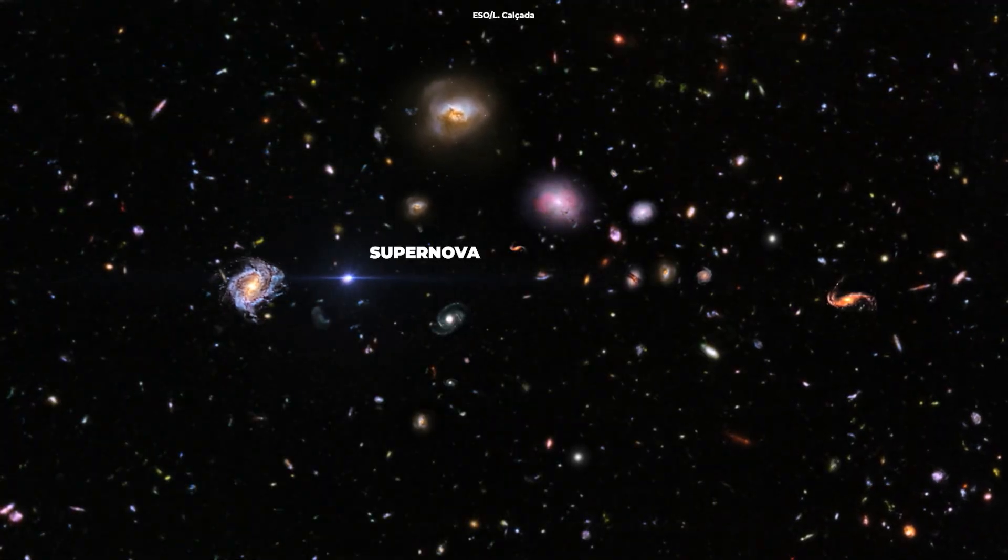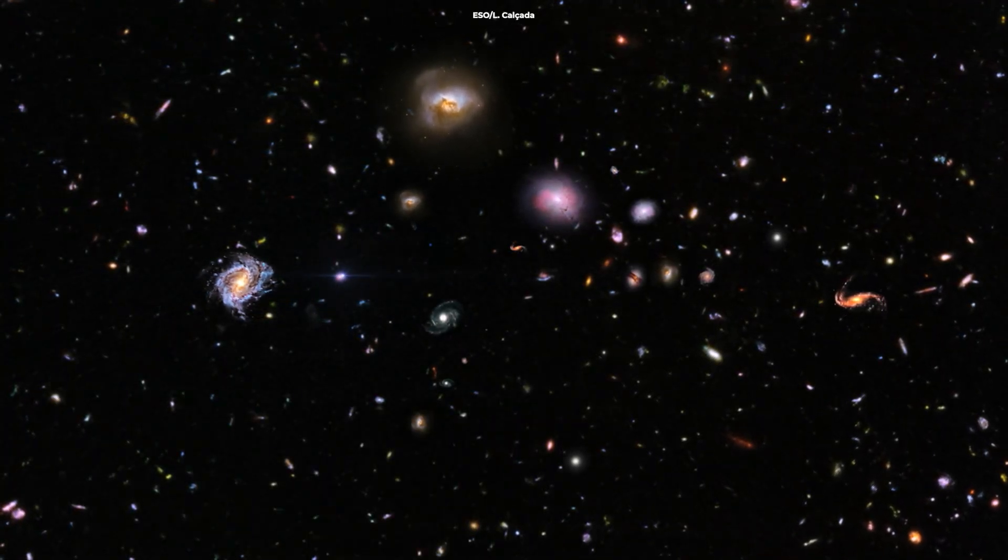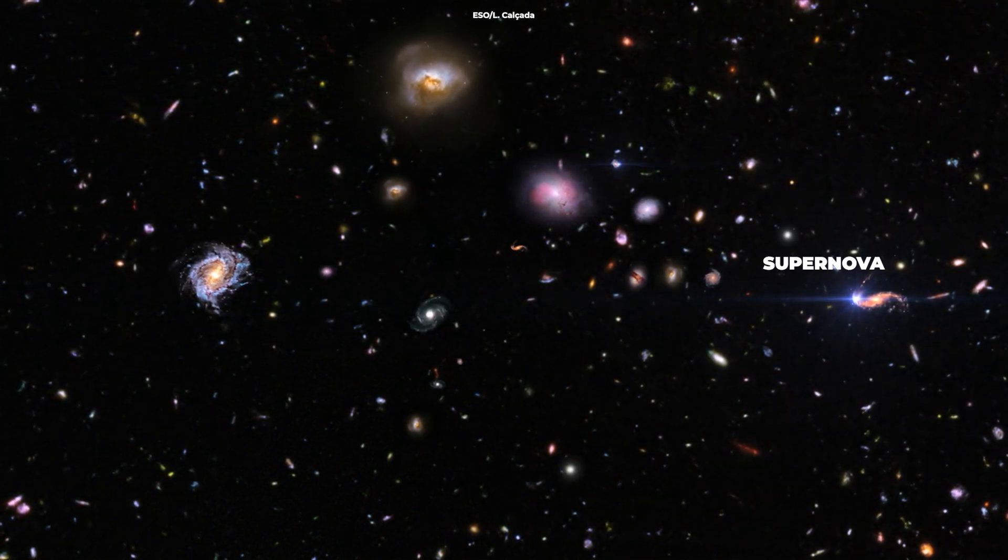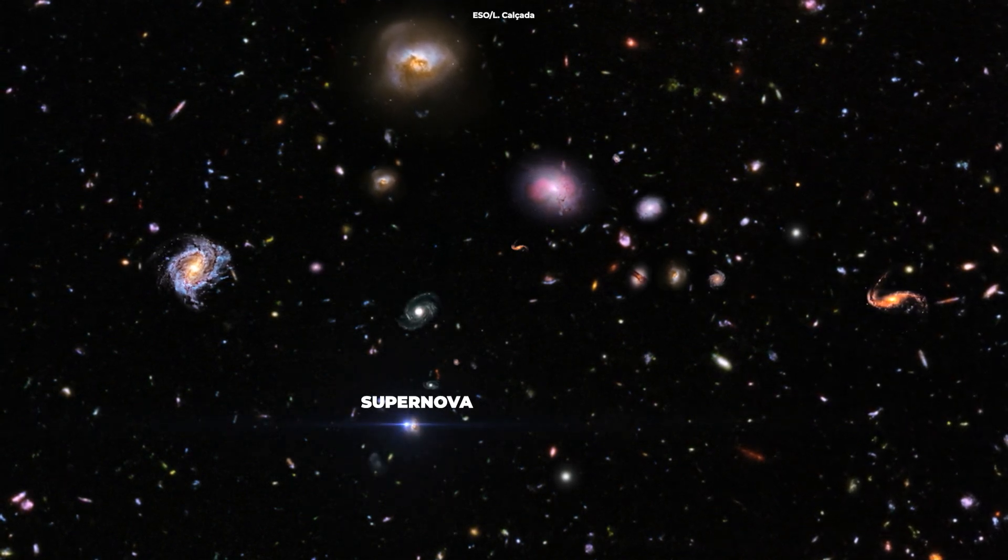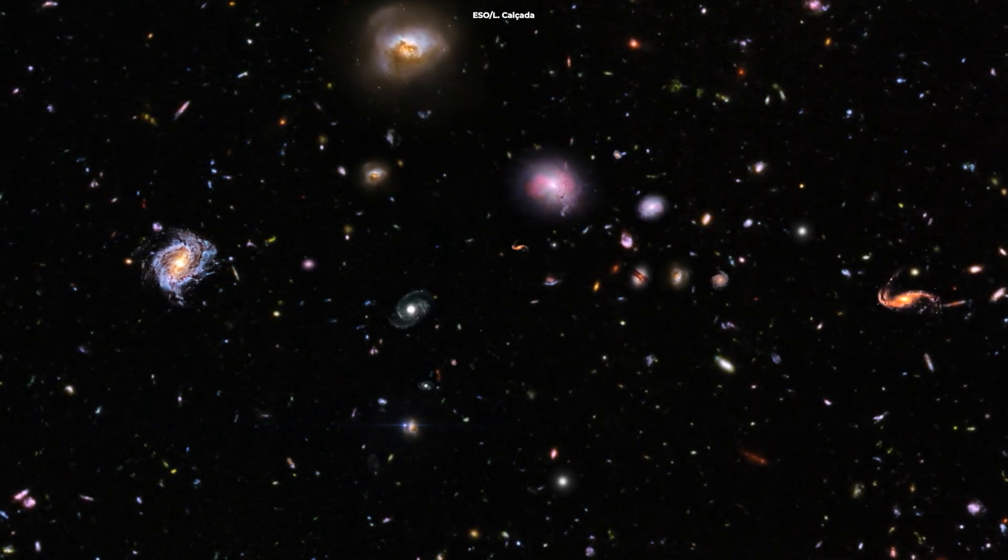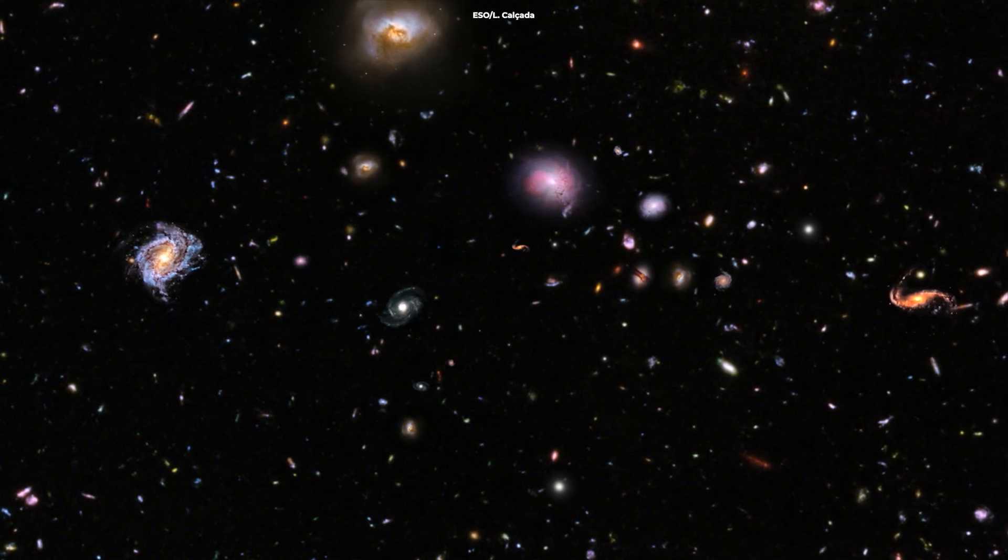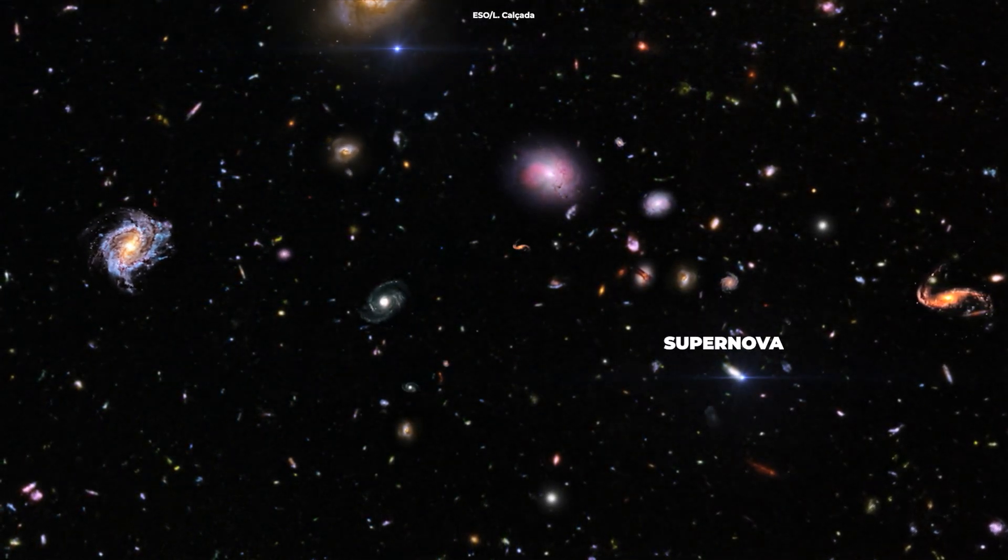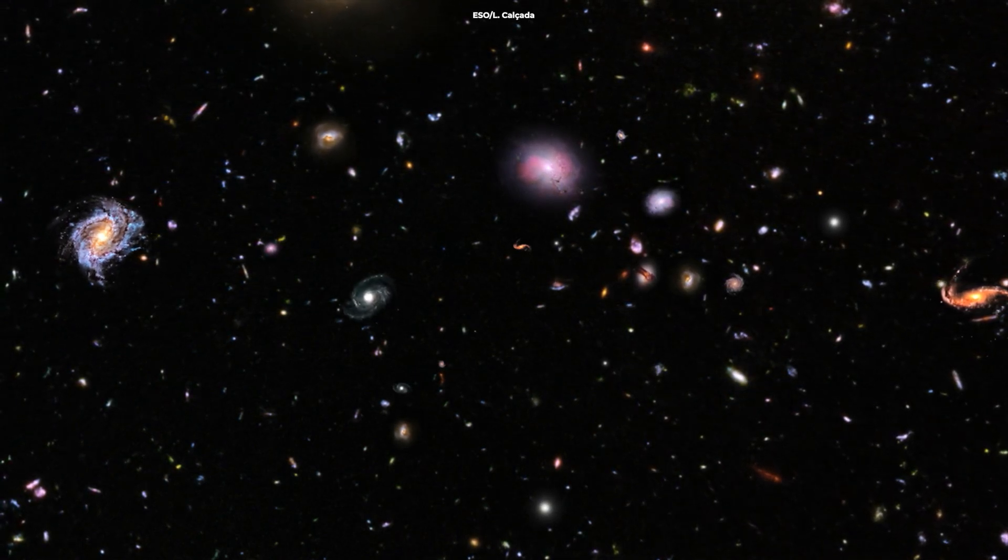The idea of dark energy came in the 1990s, when astronomers studying distant supernovae noticed something strange. These exploding stars appeared to be moving away from us faster than they should be, given the known laws of physics. This led scientists to conclude that the expansion of the universe was actually accelerating, rather than slowing down.